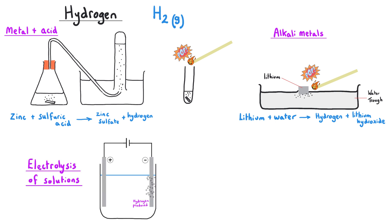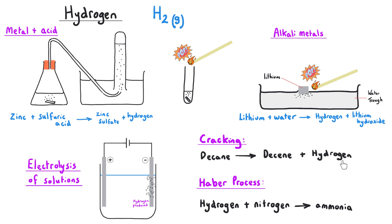Hydrogen gas can also be produced during the electrolysis of solutions. It might be that the gas forms at the negative electrode and you might be asked to test for the presence of hydrogen by collecting it and testing it with a lit splint. Hydrogen is also sometimes produced as a product of a cracking reaction, and additionally, hydrogen is a raw material in the Haber process where we make ammonia. So there are a variety of different contexts where you might encounter hydrogen gas.